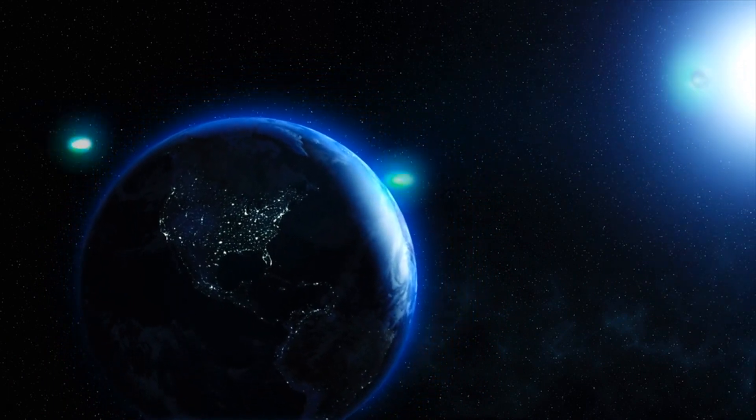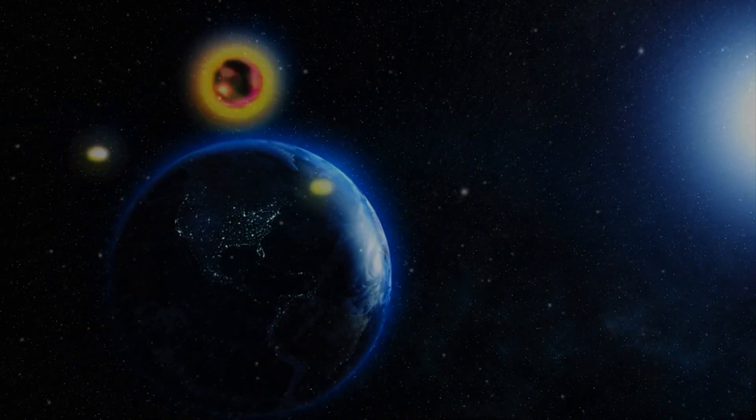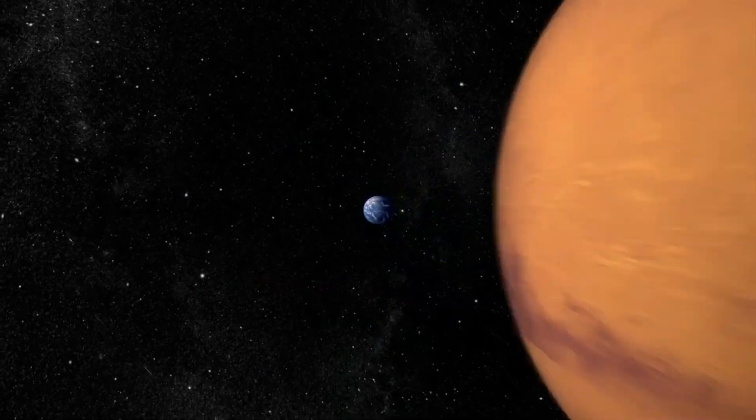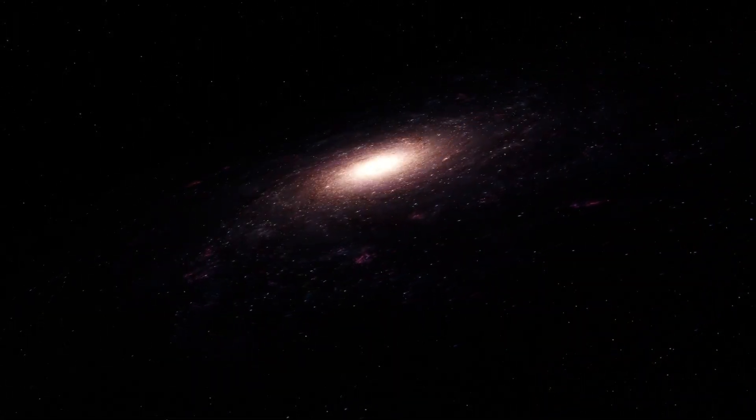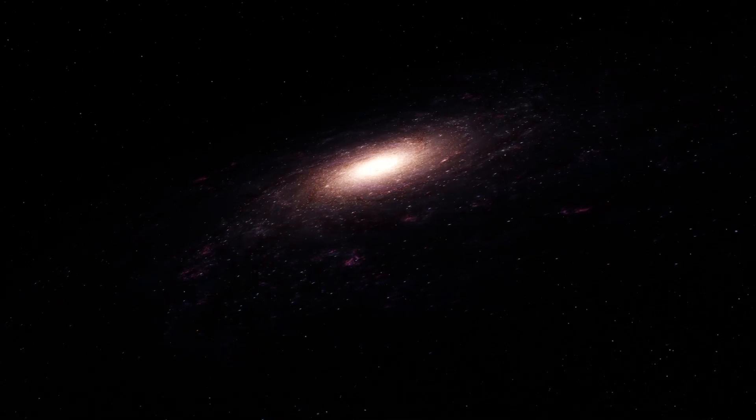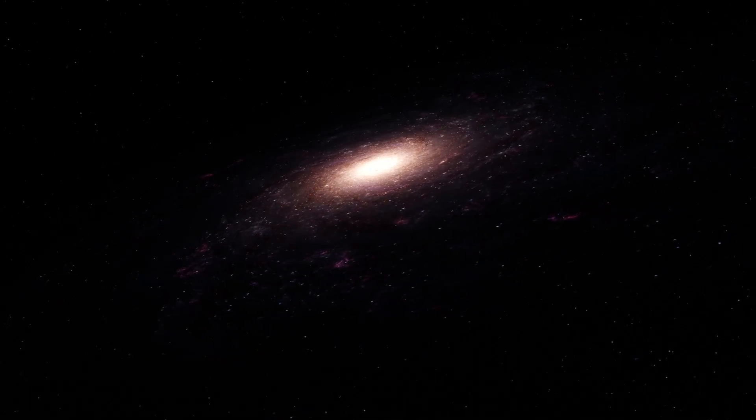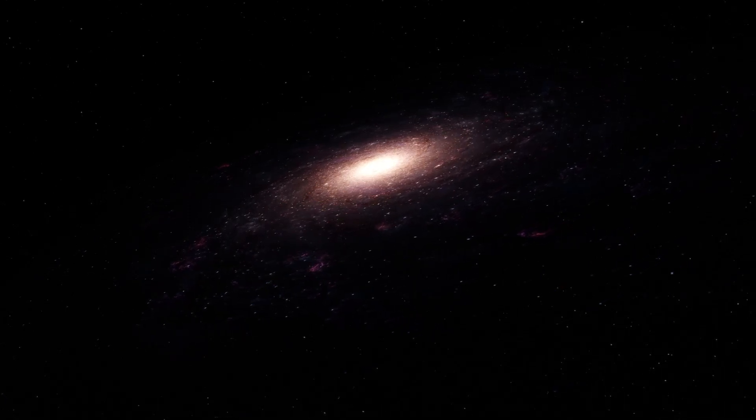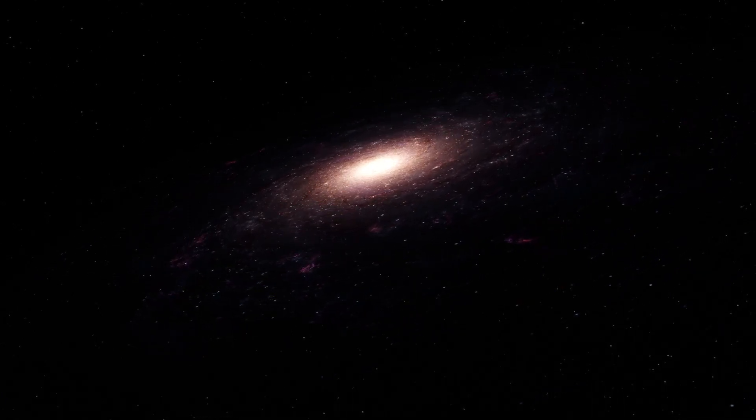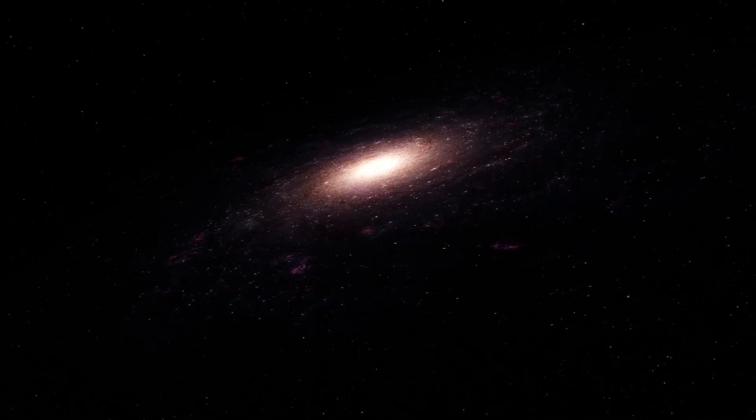Number four: Enceladus. Saturn's sixth largest moon is completely covered with clean ice and is one of the highest reflectance celestial bodies in the solar system. Its surface is cold, but there is frequent activity below. The plumes ejected by the moon contain a variety of different compounds, including brine, ammonia, and organic molecules such as methane and propane.